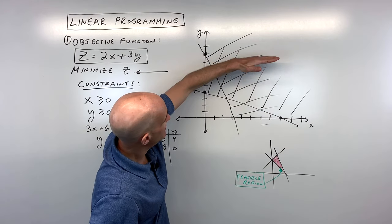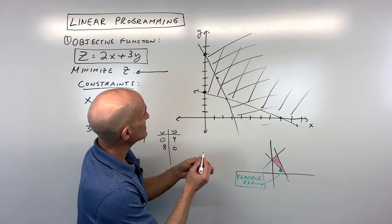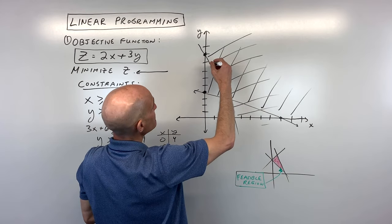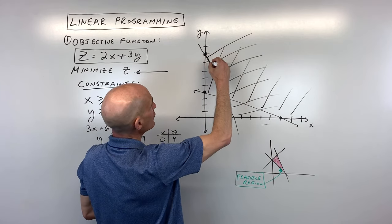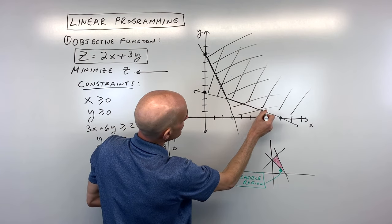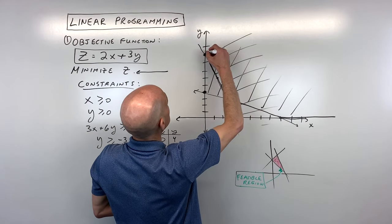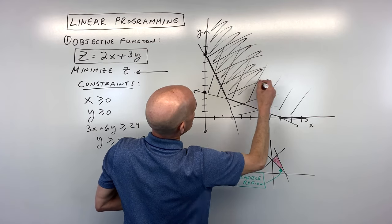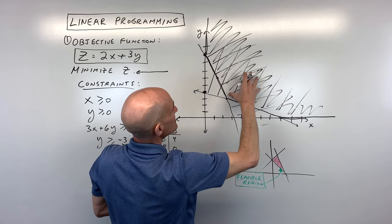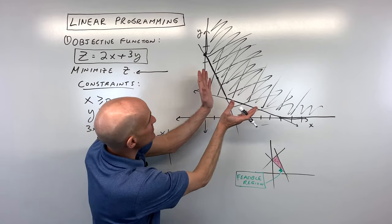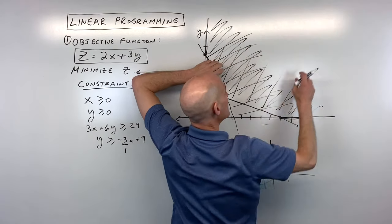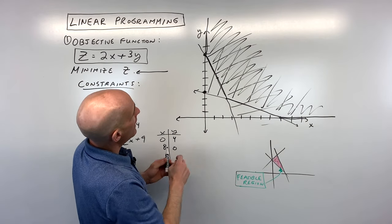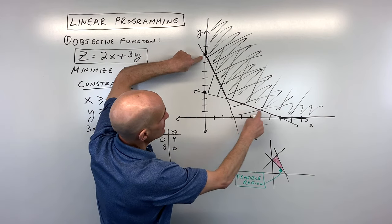You can see we were above the x-axis, to the right of the y-axis, above this line, and above this line. Where do all these regions overlap? They're overlapping here, forming what's referred to as an unbounded region — because you can see it keeps going, continuing forever. Now we're going to pick the vertices along this region.